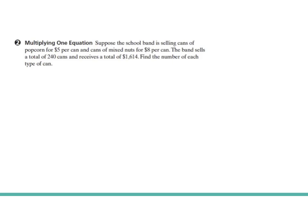Here's a real world example. We're going to have these two equations in standard form. The band is selling popcorn and mixed nuts. They sold a total of 240 cans and collected $1,614. Let's write our equations. We're going to define your unknowns.